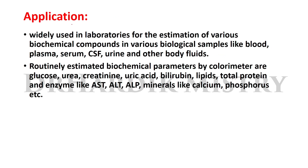Colorimetry is widely used in laboratories for the estimation of various biochemical compounds in biological samples such as blood, plasma, serum, CSF, urine, and other body fluids. Routinely estimated biochemical parameters include glucose, urea, creatinine, uric acid, bilirubin, lipids, total protein, and enzymes such as AST, ALT, ALP, and minerals like calcium and phosphorus. If you like this presentation, please share it with your friends, groups, and colleagues. Thank you.